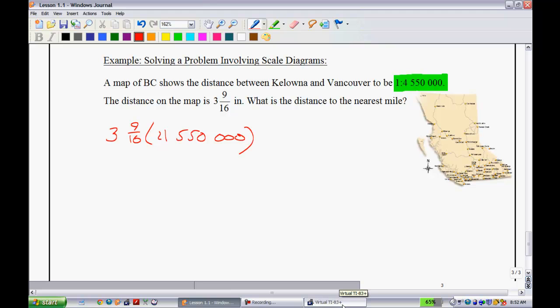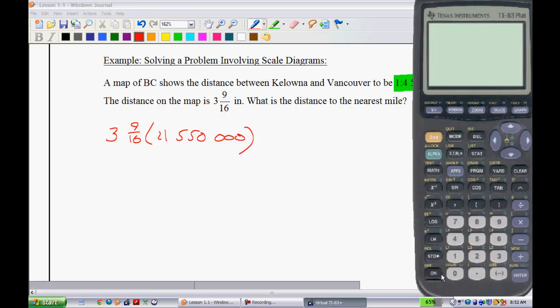So this is one where obviously you'd be able to use a calculator. So we will take 3 and 9 sixteenths, multiply it by that. Let's go and just change 3 and 9 sixteenths into an improper fraction. So we'll go 16 times 3 plus 9. So that gives you 57. So we'll go 57 divided by 16.